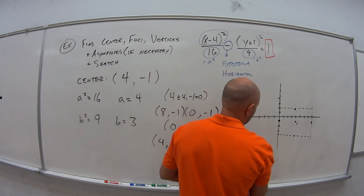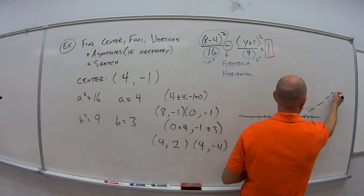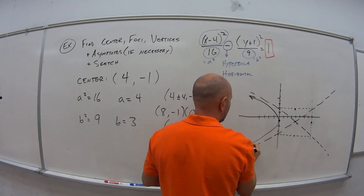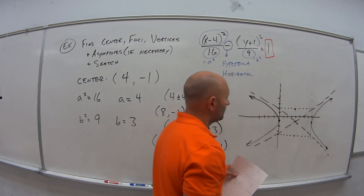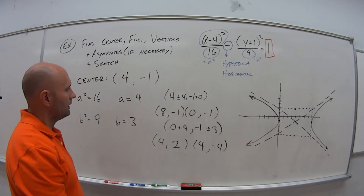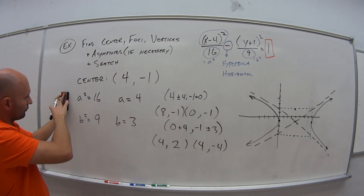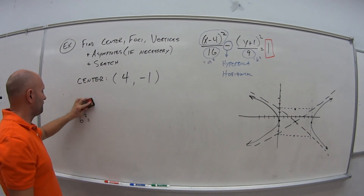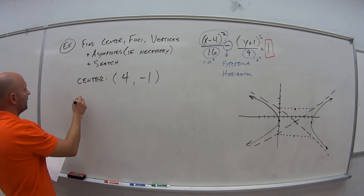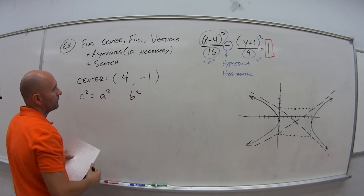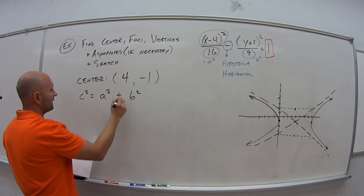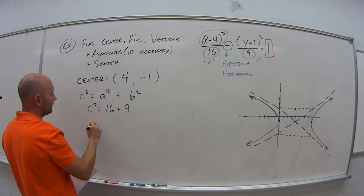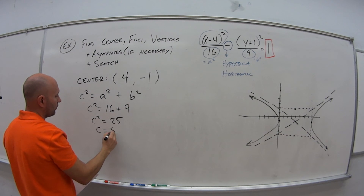I can sketch the hyperbola now: the asymptotes go through the center and through the corners of this central box, and the hyperbola stays inside the asymptotes opening left and right. Now I still need the foci. For the foci I need c. c squared equals a squared plus b squared — opposite of the minus sign in the equation. So c squared is 16 plus 9, which equals 25. So c is equal to 5.